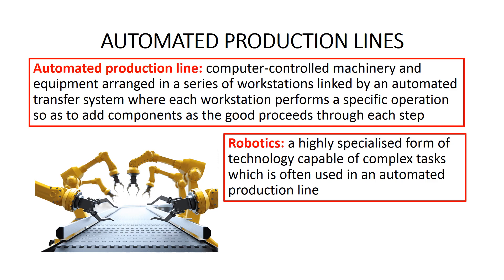Automated production lines and robotics are often used in the mass production of goods. For example, in the video on the Toyota factory, we saw how automated production lines assembled all the components necessary to produce a Toyota car, including stamping the panels, assembling the chassis, painting the car body, and fixing doors, bonnets, windscreens, and tires.